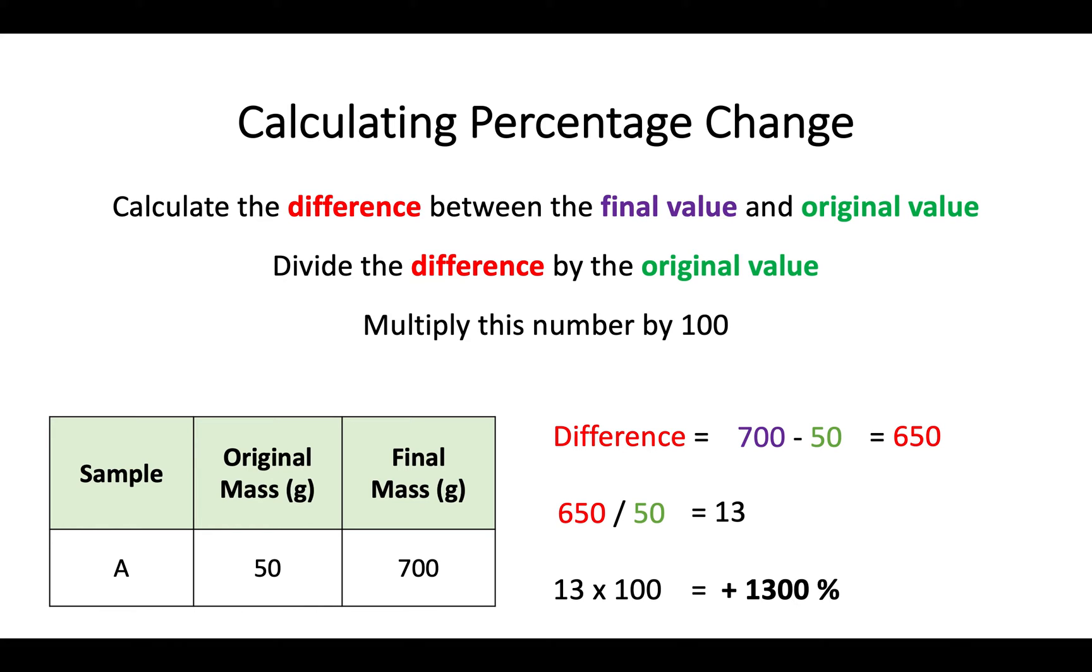Once we find the difference we will then divide the difference by that original value which was 50. So 650 divided by 50 gives us an answer of 13. And then in this case 13 times 100 in order to give us our percentage change of value. Again it's a positive so we either add a plus there or say increase of 1300 percent. So again a very large one but it can show how large or how substantial this increase is.